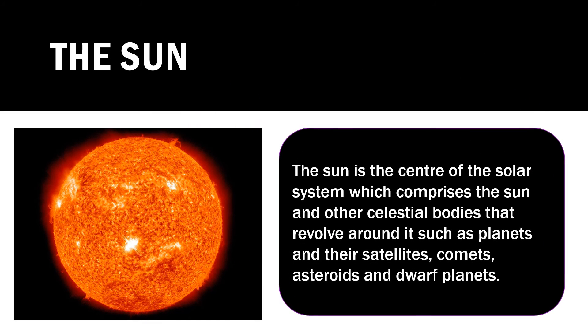The sun is the center of the solar system, which comprises the sun itself and other celestial bodies—celestial means heavenly bodies—that revolve around it, such as planets and their satellites, comets, asteroids, and dwarf planets.